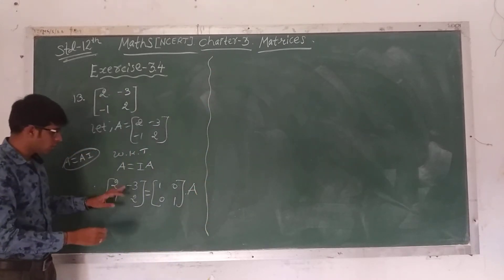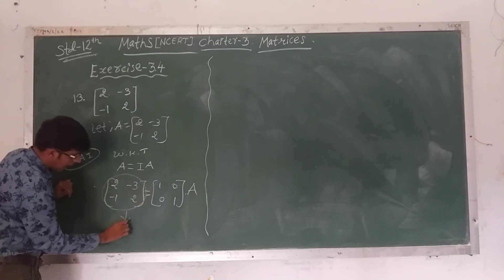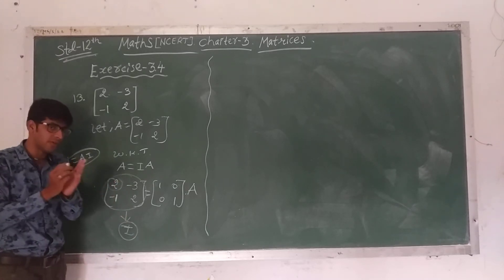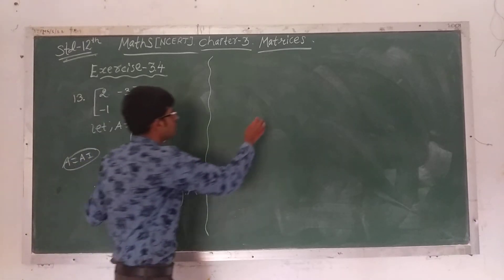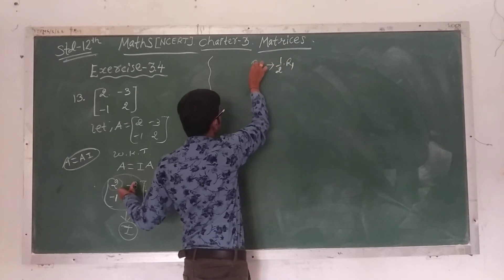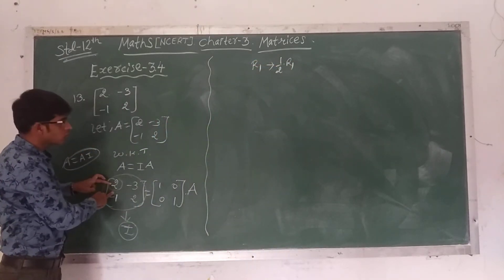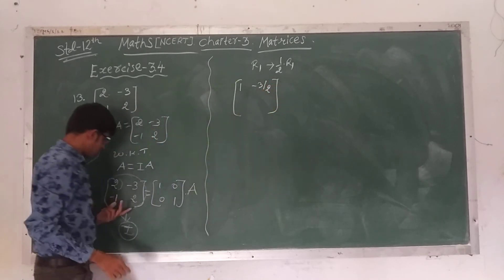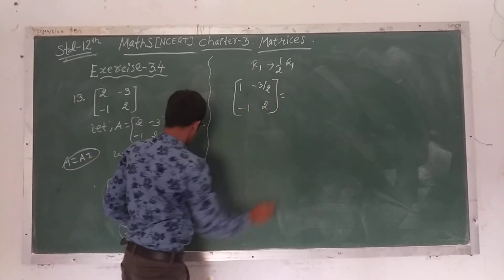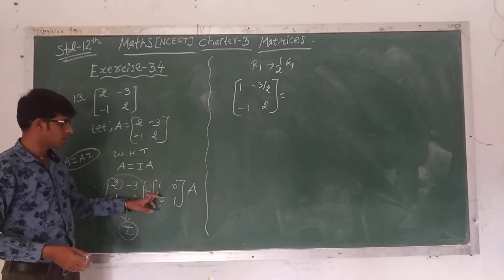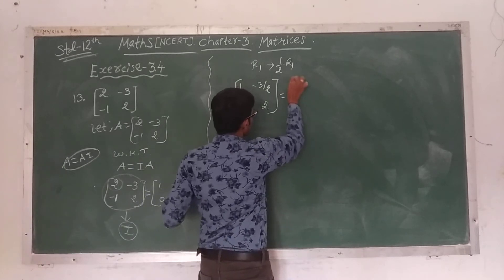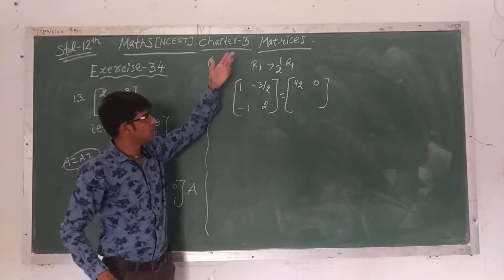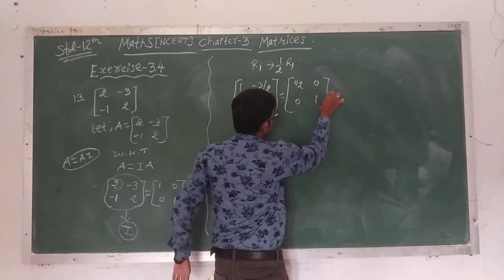Our goal is to write the left-hand side as the identity matrix. First, we make the A(1,1) element equal to 1, so we divide the first row by 2: (1/2)R1 tends to R1. This gives 2÷2 = 1, -3÷2 = -3/2. Second row as it is: [-1, 2]. On the right hand side: [1/2, 0; 0, 1] times A.